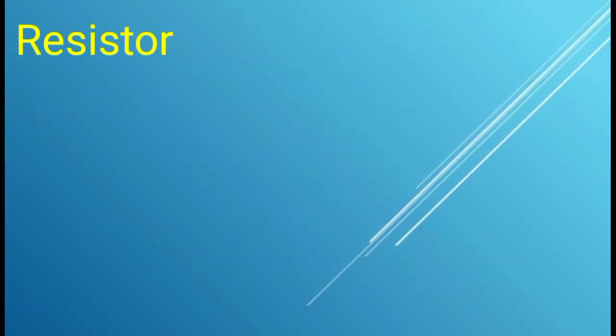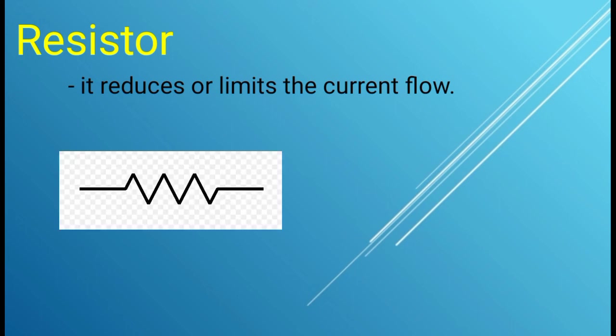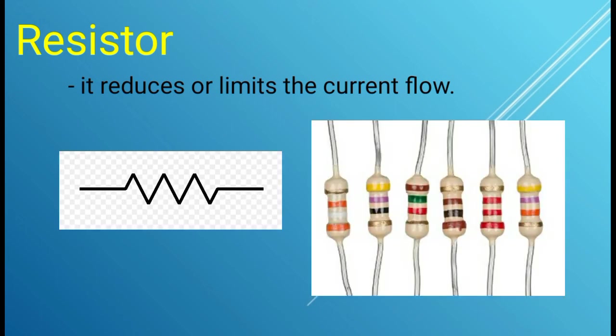Next is the resistor. It reduces or limits the current flow. And the symbol is like this. The actual resistor looks like this. As you notice, there are colors coded in the body. Every color code has a corresponding numerical value that represents the resistance of the resistor.